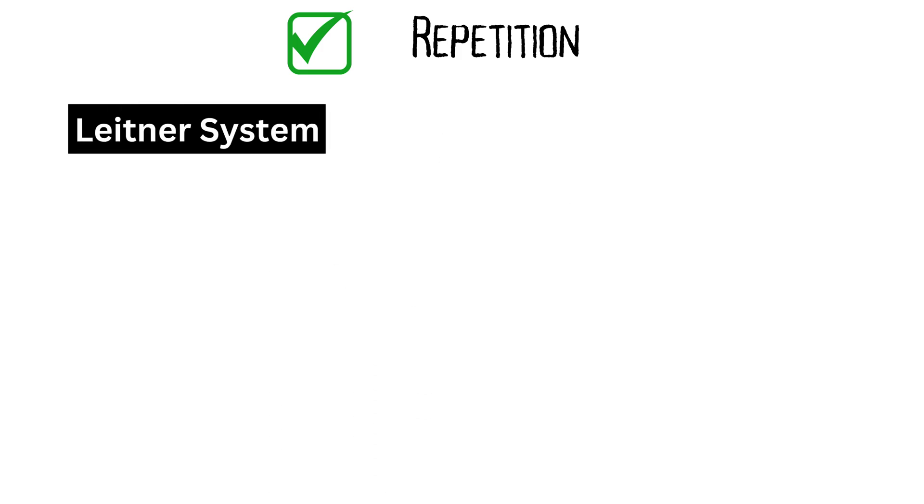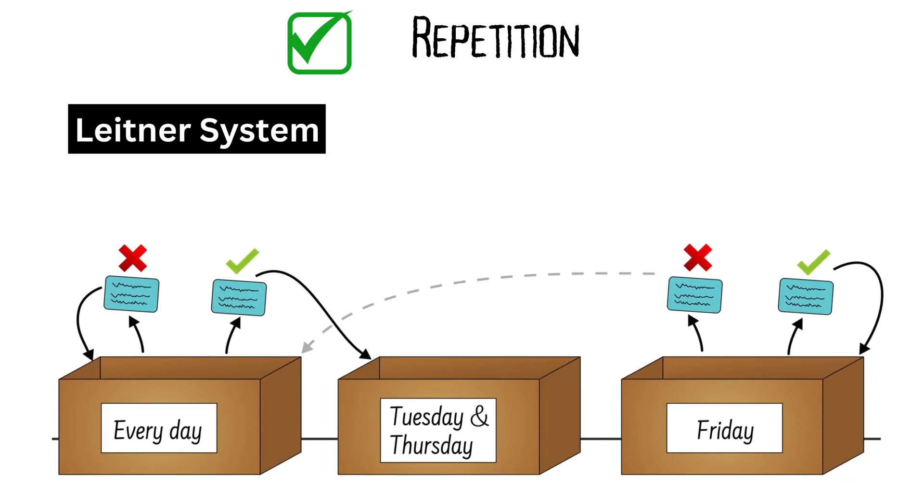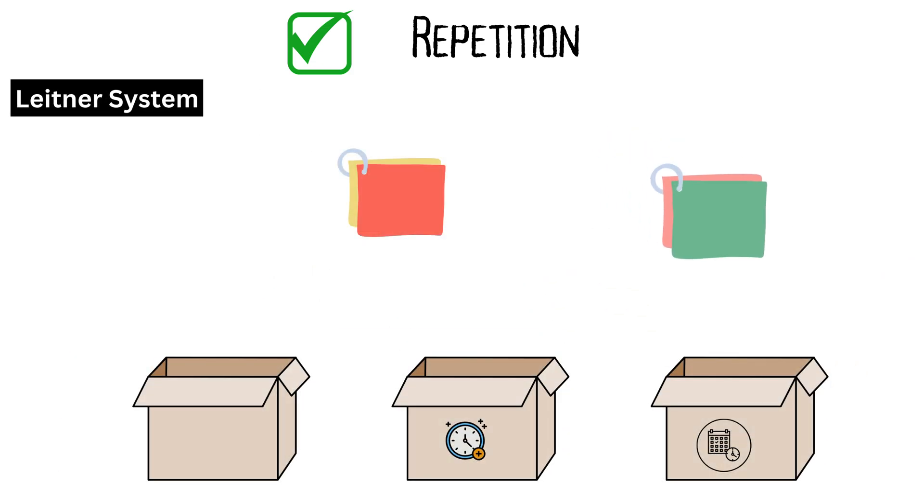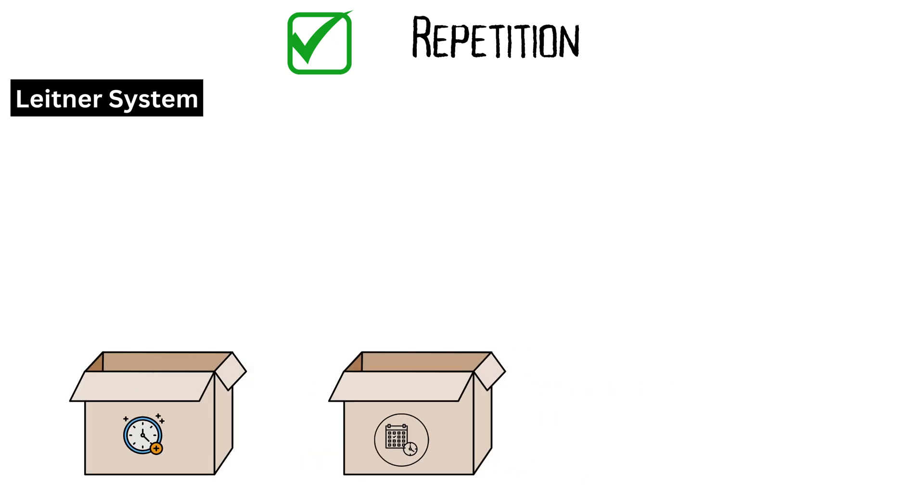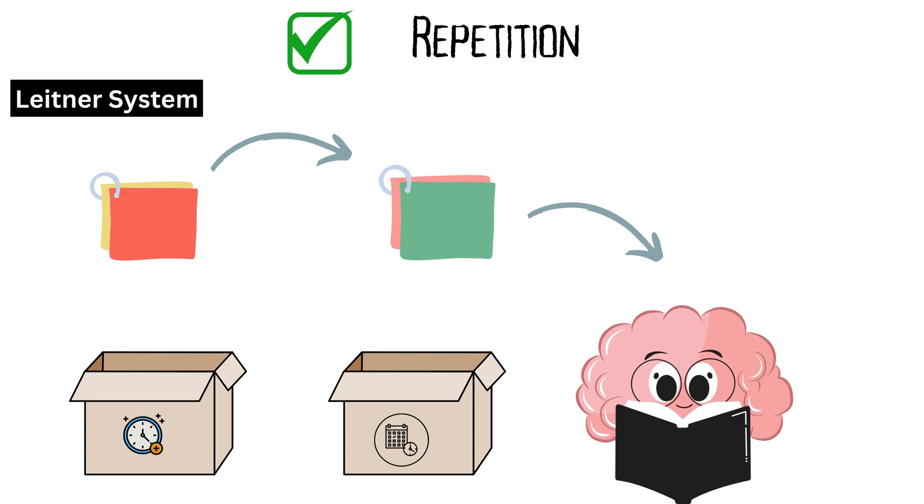One effective method is the Leitner system, a form of spaced repetition that uses flashcards. In this system, you sort flashcards into different boxes based on how well you know the information. Cards you know well move to boxes with longer review intervals, while cards you struggle with stay in boxes with shorter intervals. This ensures you focus on the information you're least familiar with. To take full advantage of Miller's theory, repeat your chunks of around seven items until they're ingrained in your memory.